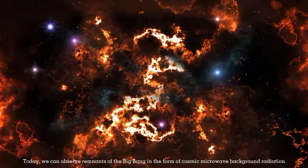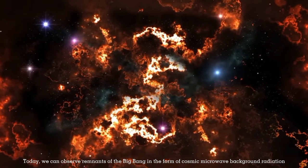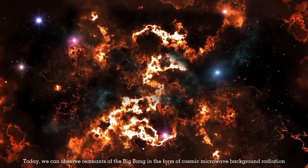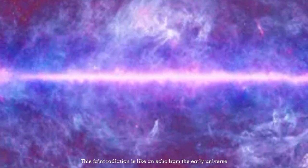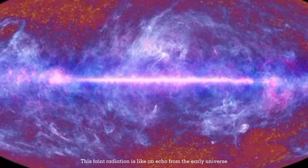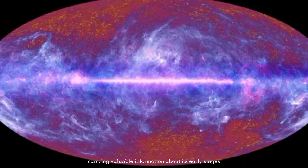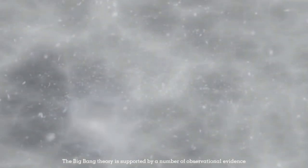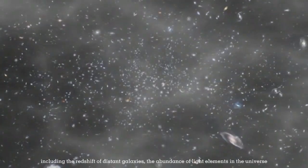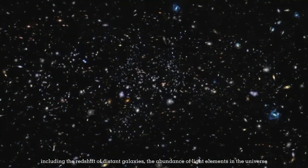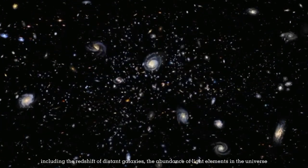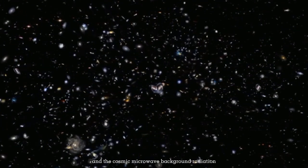Today, we can observe remnants of the Big Bang in the form of cosmic microwave background radiation. This faint radiation is like an echo from the early universe, carrying valuable information about its early staging. The Big Bang theory is supported by a number of observational evidence, including the redshift of distant galaxies, the abundance of light elements of the universe, and the cosmic microwave background radiation.